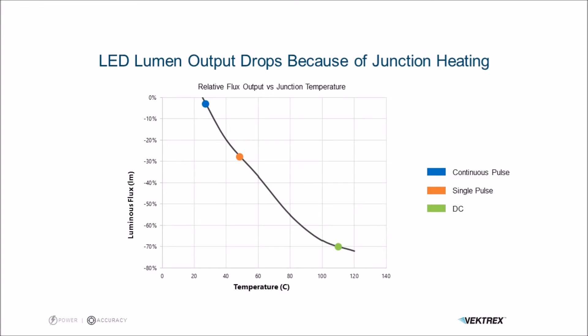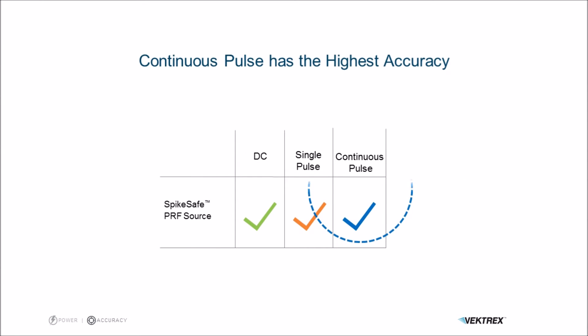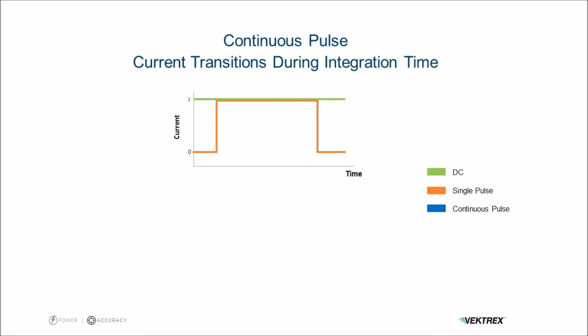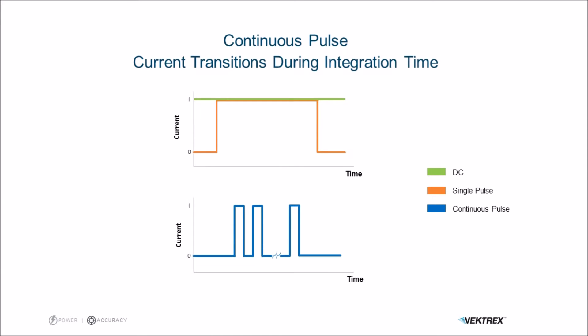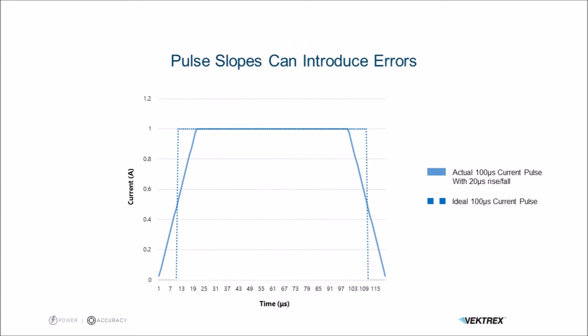So continuous pulse is obviously the best or most accurate measurement. But what do we need to know about continuous pulse? Continuous pulse is a little different from single pulse and DC in that the current actually transitions up and down during the spectrometer integration time. The integration time incorporates one or a series of pulses rather than having the current on before the spectrometer starts. This means that the slope sides — the rise and fall — are part of the measurement.